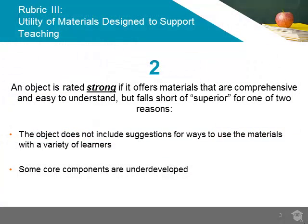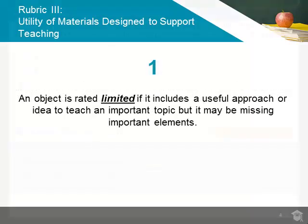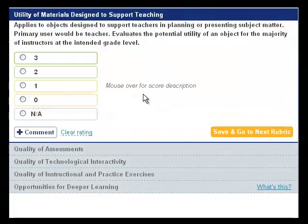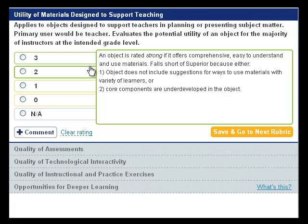An object that will be rated strong, a 2 rating, should also be comprehensive and easy to understand, but falls short of superior if it does not have suggestions for how to use material with a variety of learners, or if some components of the object are underdeveloped.